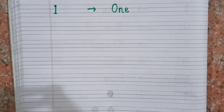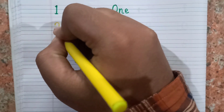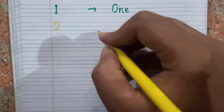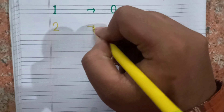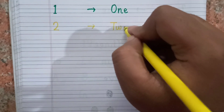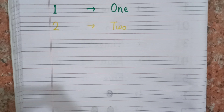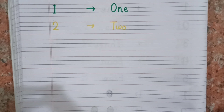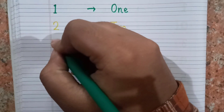Now I will write the next number: two. This is two, and the spelling of two is T W O. Two.